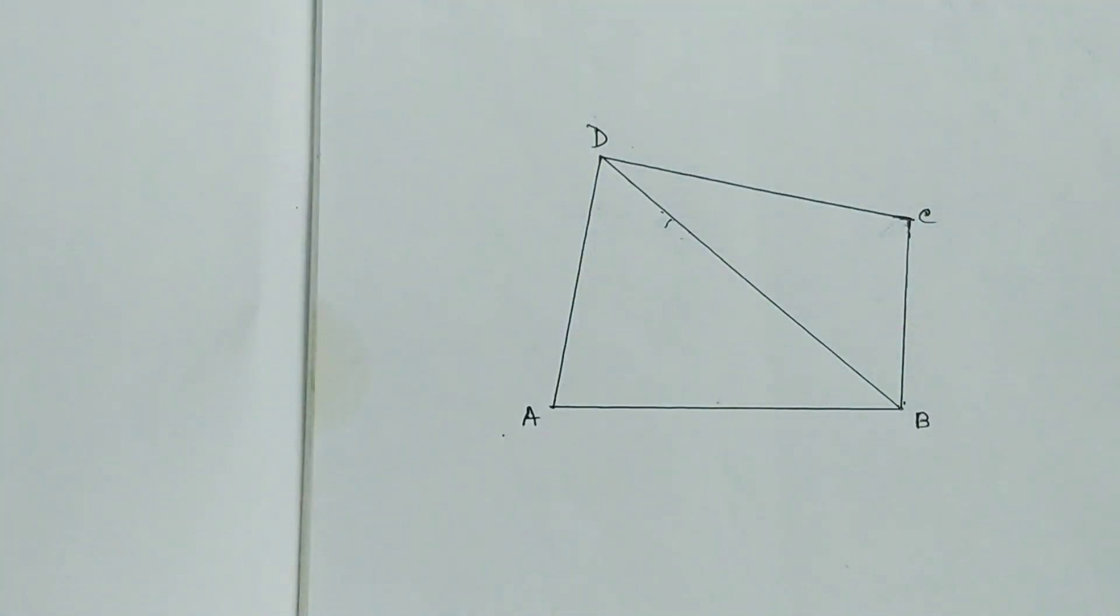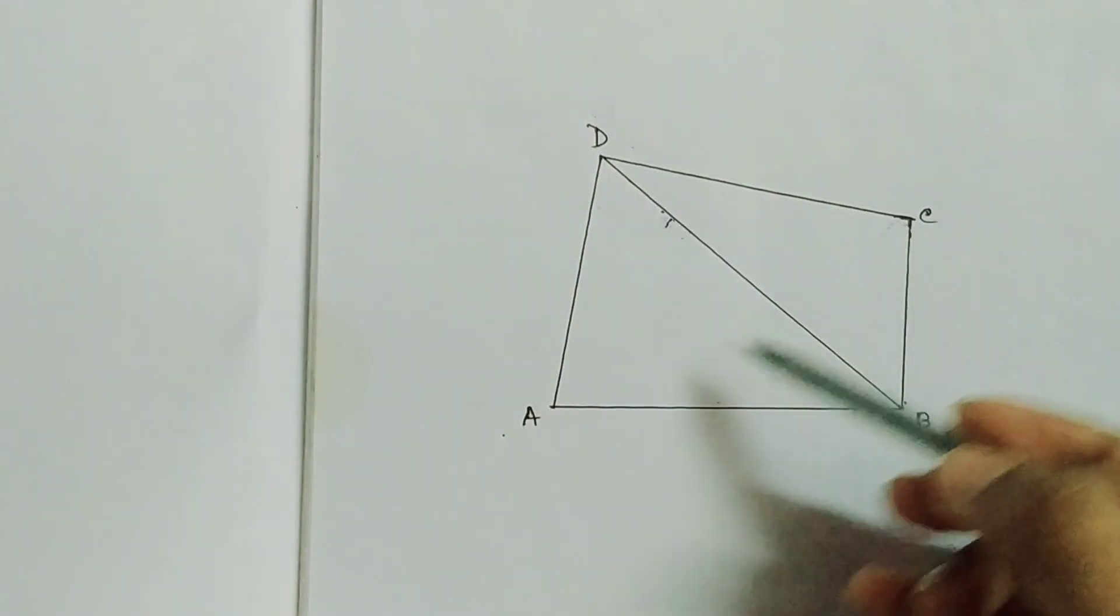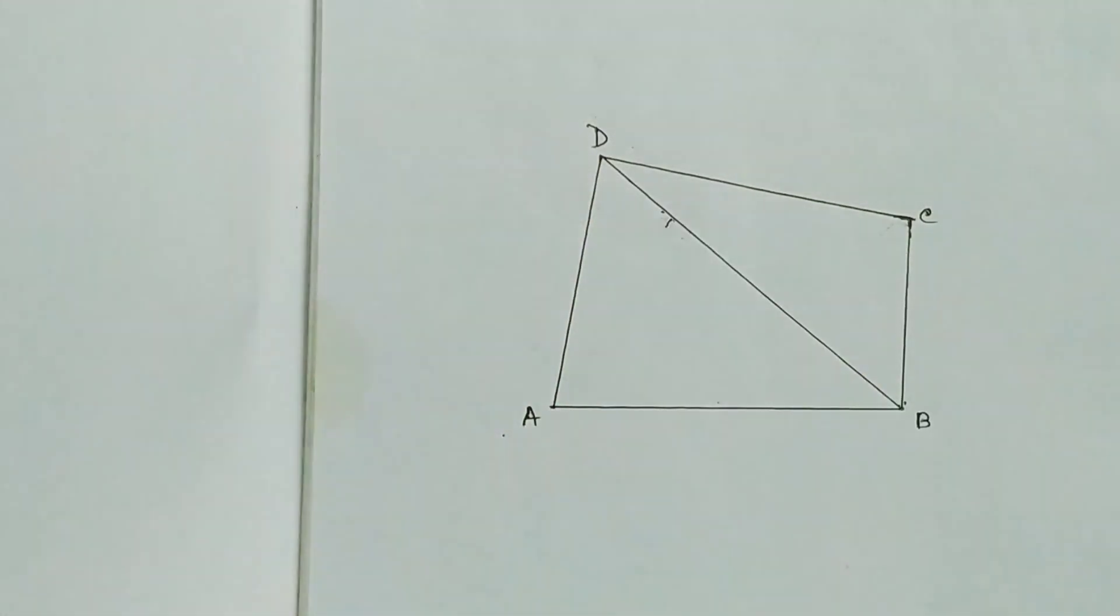Now the next task is we have to draw one line parallel to the side BD from the point C. And if you draw AC then the construction will be changed, then you have to draw one parallel line with AC from the point D. So I am drawing one parallel line with BD from the point C.